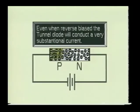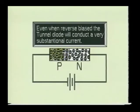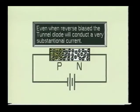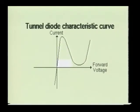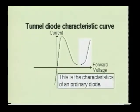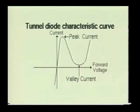When the tunnel diode is forward biased, its initial behavior is similar to its reverse bias condition. As seen from this characteristic curve, when the forward bias is increased, more and more electrons will tunnel through the barrier, thus increasing the current. This occurs until a maximum level of tunneling is reached. As the forward bias is further increased, the tunneling effect will begin to decrease. When the forward bias is increased sufficiently, the tunnel diode characteristics will become similar to that of an ordinary diode. The tunnel diode is generally operated in its negative resistance region between the peak current and the valley current, which is its most important property.